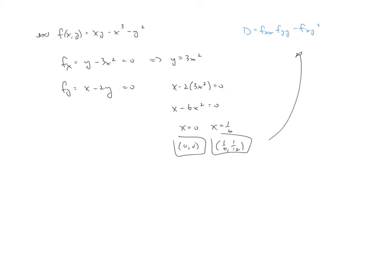Now, as far as this D goes, D is going to equal f sub xx, so that's going to be then the derivative of this with respect to x. So f sub xx, derivative of this guy with respect to x, which gives us a negative 6x. Then I have f sub yy, derivative of this with respect to y, which would be a negative 2. And then this guy right here, f sub xy. So that's going to be the derivative of f sub x with respect to y, which in this case is 1, and then squared.